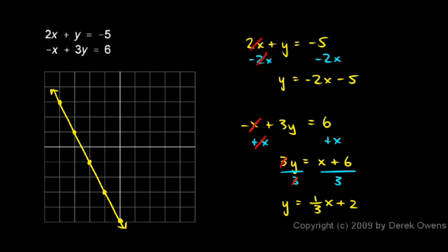And I can see that this second line here has a y-intercept of 2, and a slope of 1 third. That means I have a rise over run of 1 third, so I go up 1 and over 3, and that puts me here.